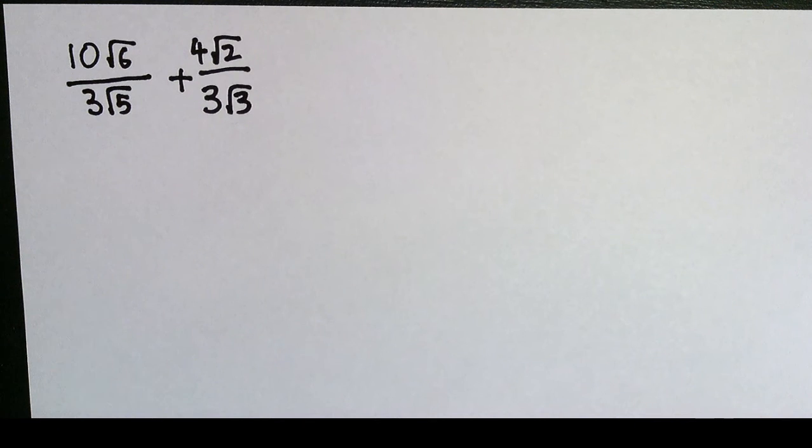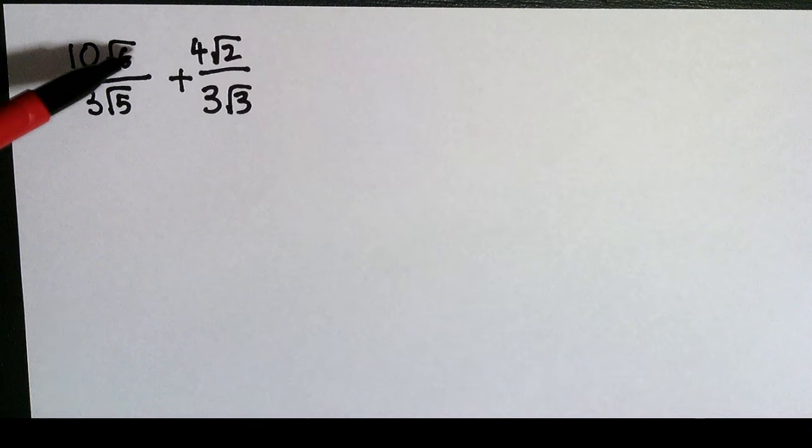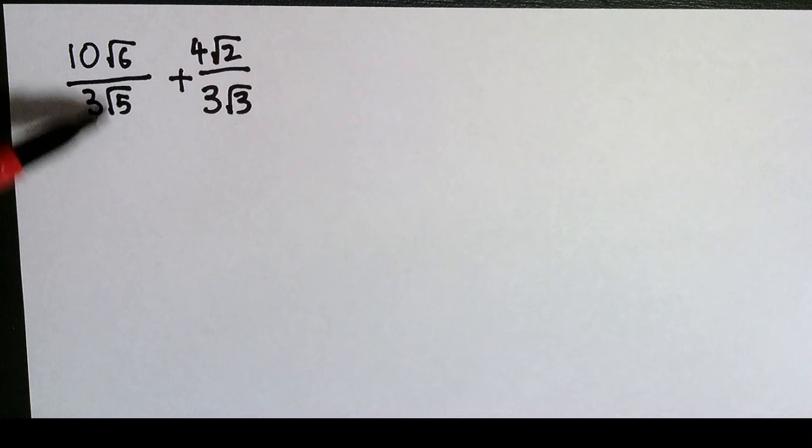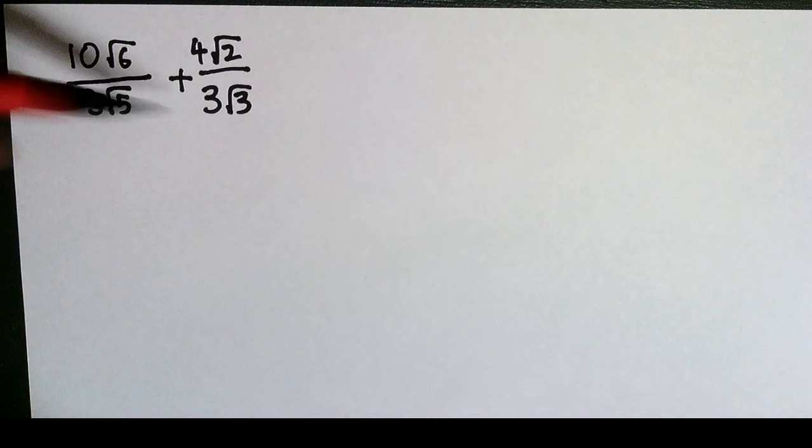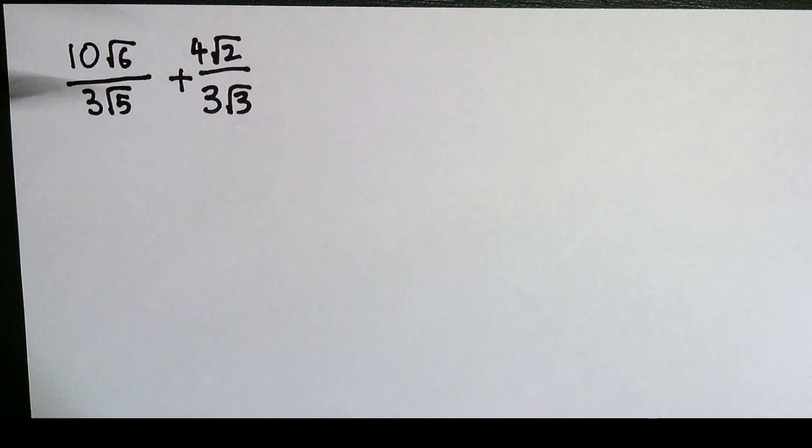So I just follow the normal procedure for rationalizing where I multiply above and below by the third on the bottom so that I can get rid of it. Let's start to set that up. There's two fractions so I've got to do the same in both. For the first fraction I need to multiply above and below by root 5, and for the second fraction I need to multiply above and below by root 3. So let's do that right now.